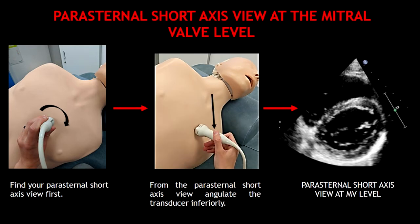Another very important view is the parasternal short axis view at the mitral valve level. To obtain this view, place yourself in your parasternal short axis view first, and from this position angulate the probe inferiorly until you're able to see the mitral valve leaflets.